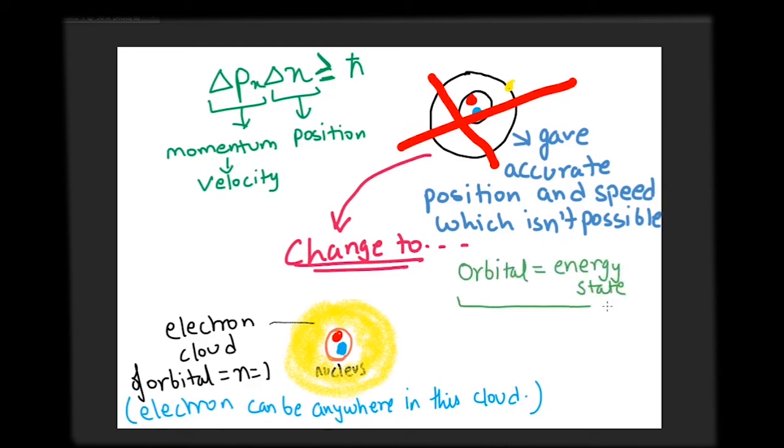These orbitals have substates of energy characterized by the spin, the angular momentum of electrons, and the distance of the orbital from the nucleus.